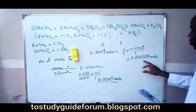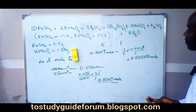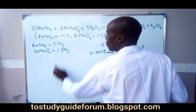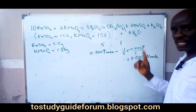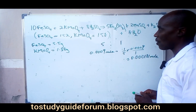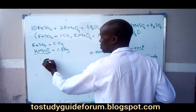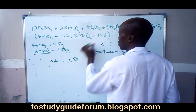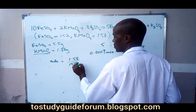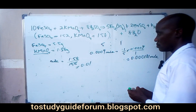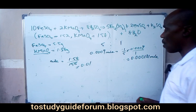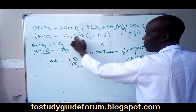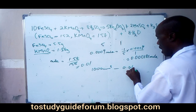Now we have the number of moles. Coming back, we need to find the number of moles in 1000 dm³ — or one dm³. The number of moles of potassium permanganate here is found using the mass over molar mass, which gives us 0.01. That means 1000 cm³ of this potassium permanganate solution contains 0.01 moles.